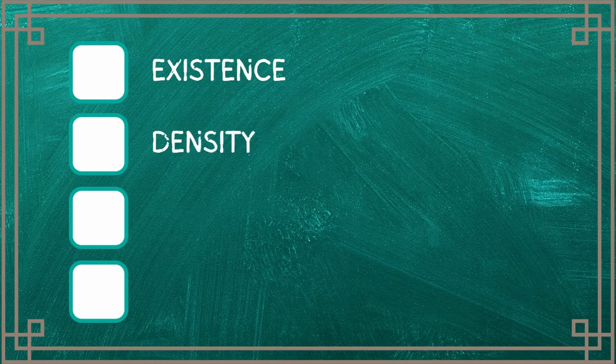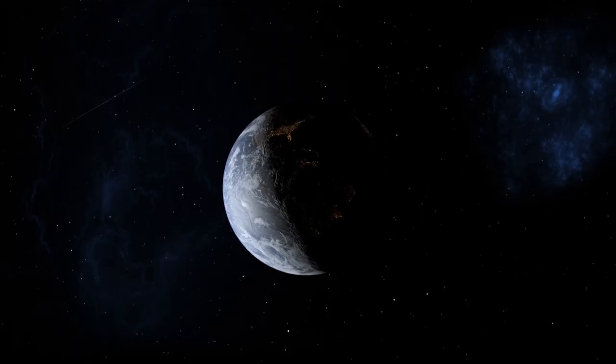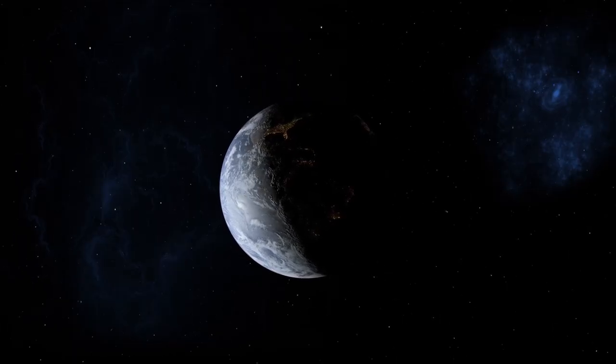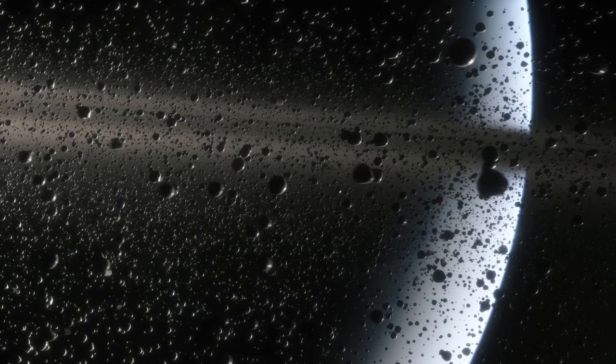Firstly, what are we looking for when we try to detect a planet and determine whether it is Earth-like? The most important is the planet itself — confirming the existence of a planet is essential. However, we are also looking for its density. Density is important because it is easier for life to form on denser, terrestrial planets like Earth or Mars, than on gaseous planets like Jupiter or Saturn.